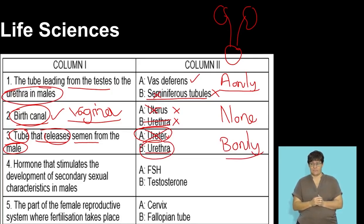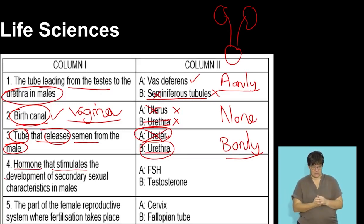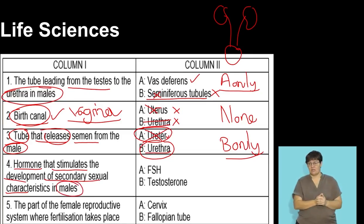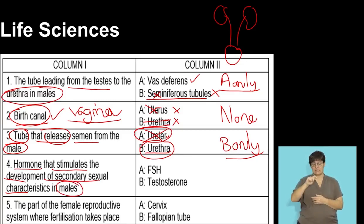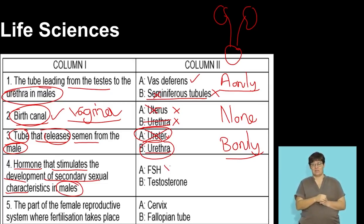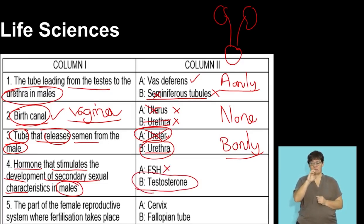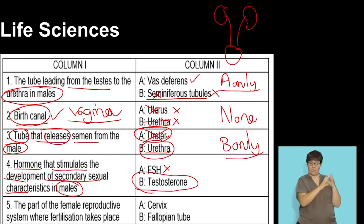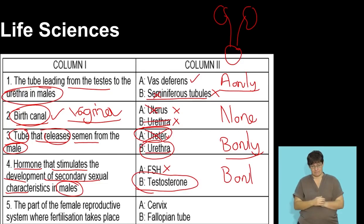Question four: the hormone that stimulates the development of secondary sexual characteristics in males. Puberty in males is influenced by testosterone. FSH stimulates the development of sperm cells and is not linked to secondary sexual characteristics. It is testosterone that is linked to the development of male characteristics at puberty. So the answer here is B only.